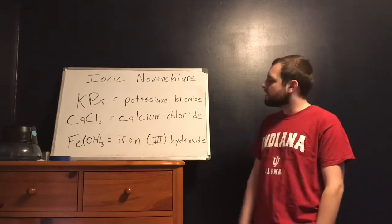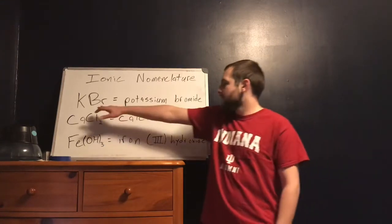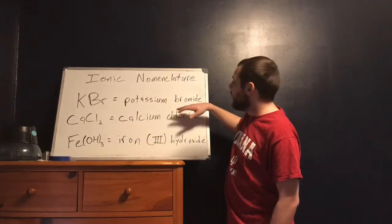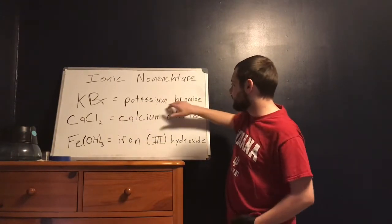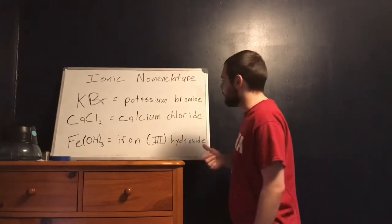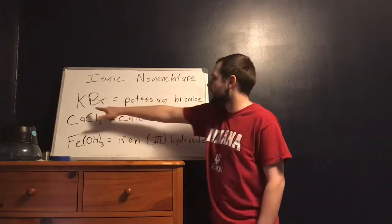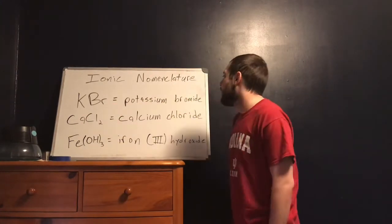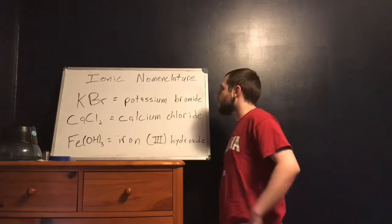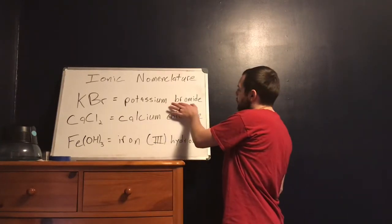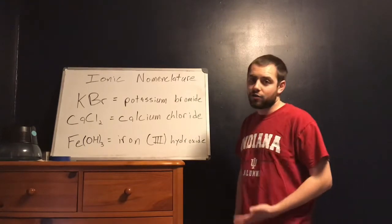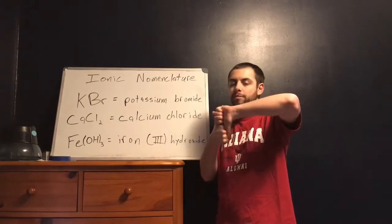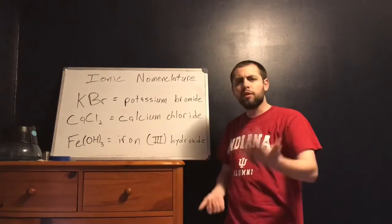Looking at these three examples to start us off: KBr — we know that this is potassium bromide. And this name is specific enough. It tells me what the composition is. It's composed of potassium, K, and bromine, Br. And it's also specific enough to tell me the structure. Because it says potassium bromide, I know that this is an ionic structure — it's going to be two ions that are attracted together because they're opposite charges.